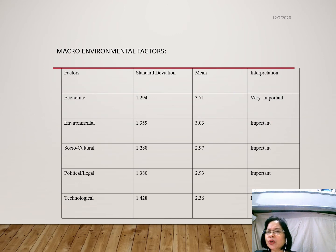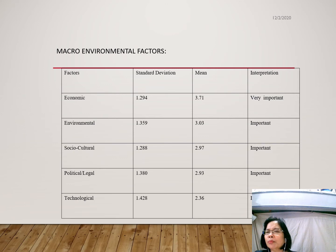Based on the results, economic factors are very important in selecting the choice of a university in a particular country, with a mean score of 3.71. The current economic state of the country, which includes the cost of living, taxes, and labor costs, are considered to be very important. Other factors such as environmental, sociocultural, political, legal, and technological factors are considered to be important.